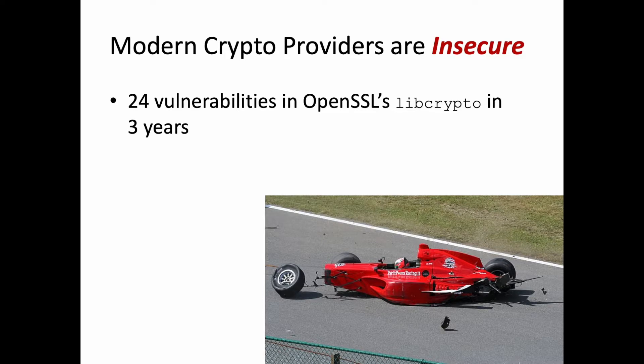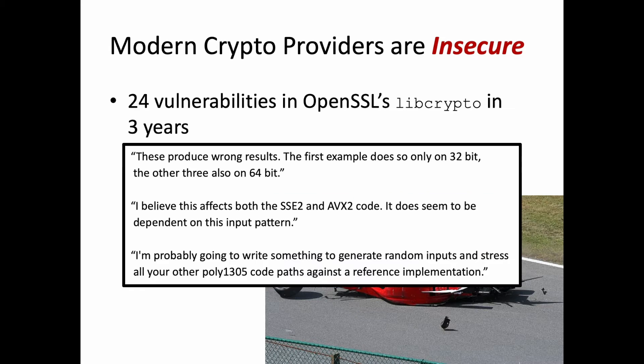Unfortunately, crypto is hard to get right, and even harder when you add the complexity necessary to get good performance. Hence, it's not surprising that vulnerabilities are regularly discovered. OpenSSL's crypto library, for example, had 24 in just three years. And if you start reading about these bugs, you'll notice that they are really subtle and hard to find. And of course, the security of your application depends on the security of your crypto provider.